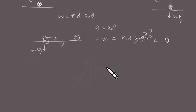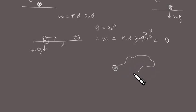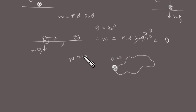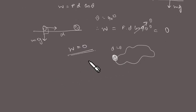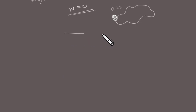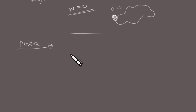A no-work force occurs when the force is perpendicular to the displacement or when the force is zero. Another case: if a body moves along any path but ends up at the same position where it started, the total displacement is zero. In that case, the total work done on the body is also zero, since work equals force into displacement.